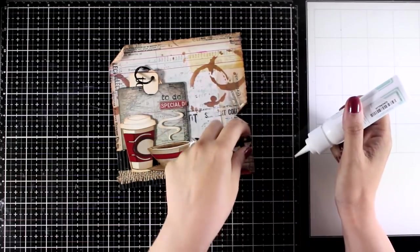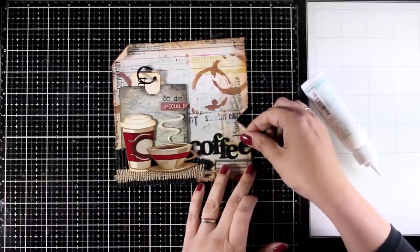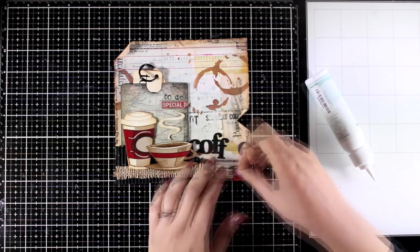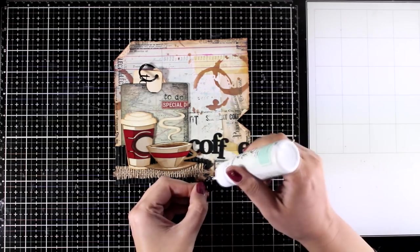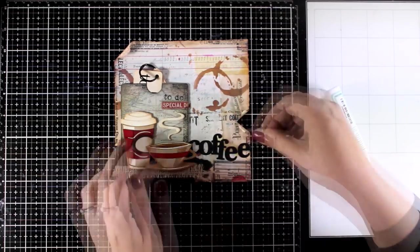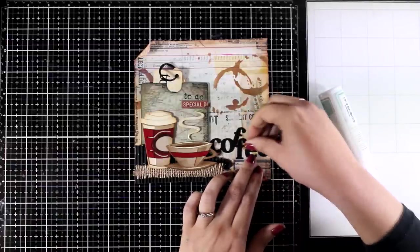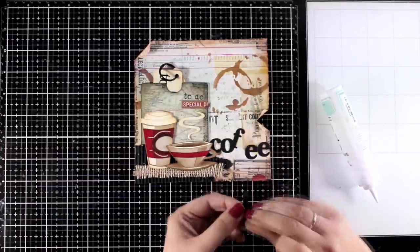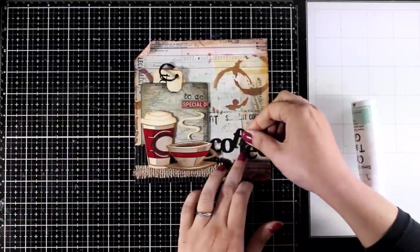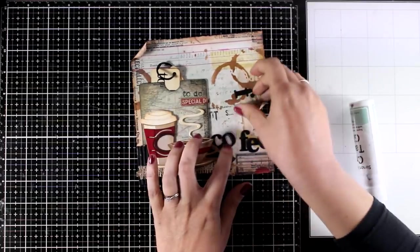I did use an alphabet die, this is by Waffle Flower, the retro one and I did cut out the letters that spell out the word coffee. So I'm going to stick them down, these are quite bigger than the actual space but I'm going to play with them a little bit, stick them up and down so they are going to fit nicely exactly where I want them to go. Every day when I wake up, before I do the wonderful things that I have to do for the day, I just have to drink a cup of coffee. And that's where the whole idea came for this project.